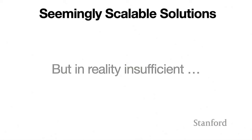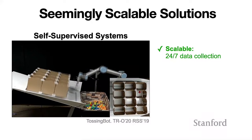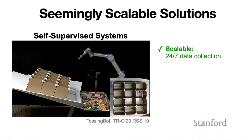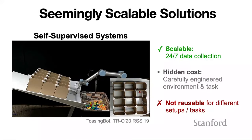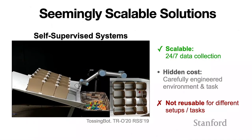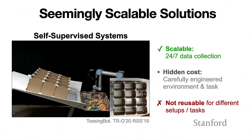Over the years, we've seen a lot of seemingly scalable solutions that are in reality insufficient. For example, the tossing bot I showed earlier — this robot can collect its own training data 24/7 by resetting its own state, so in some sense it's extremely scalable. However, the hidden cost is that you need to carefully engineer the environment for a particular task, and as a result, the data you collect with this framework is not really usable for different setups, different tasks, or different robot setups. So although it's scalable, it's not reusable.